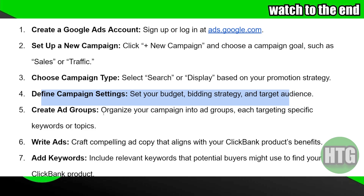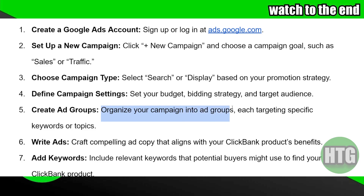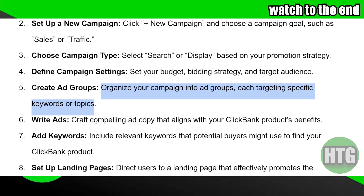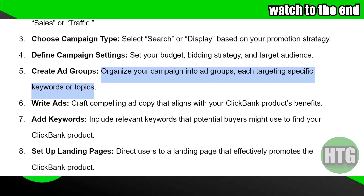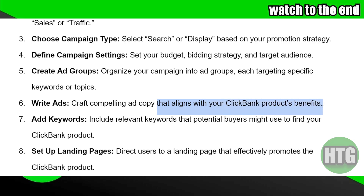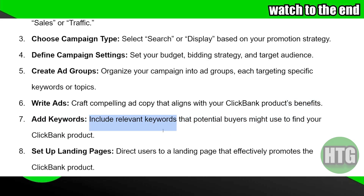Now you just have to create ad groups. Organize your ads into ad groups, each targeting specific keywords or topics. Then write your ads — craft compelling copy that aligns with your ClickBank product benefits, and include relevant keywords that a potential buyer might use to find your ClickBank products.